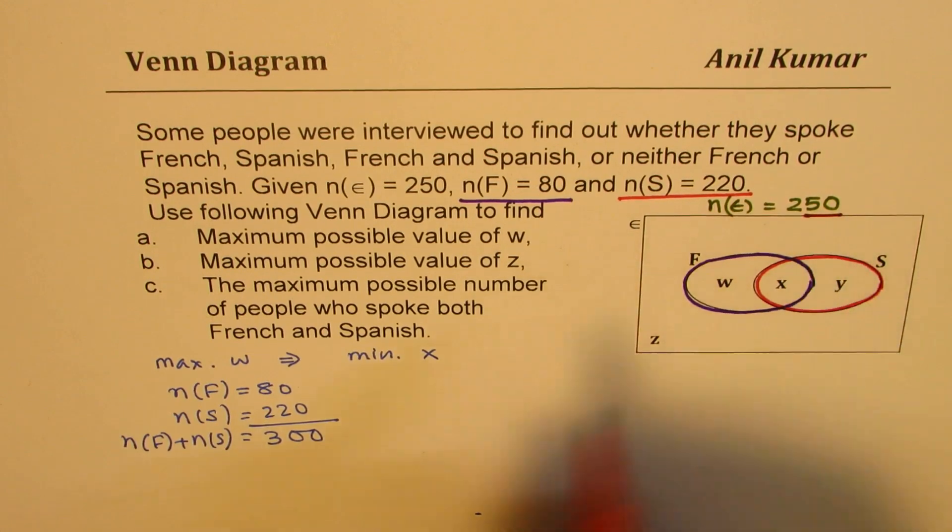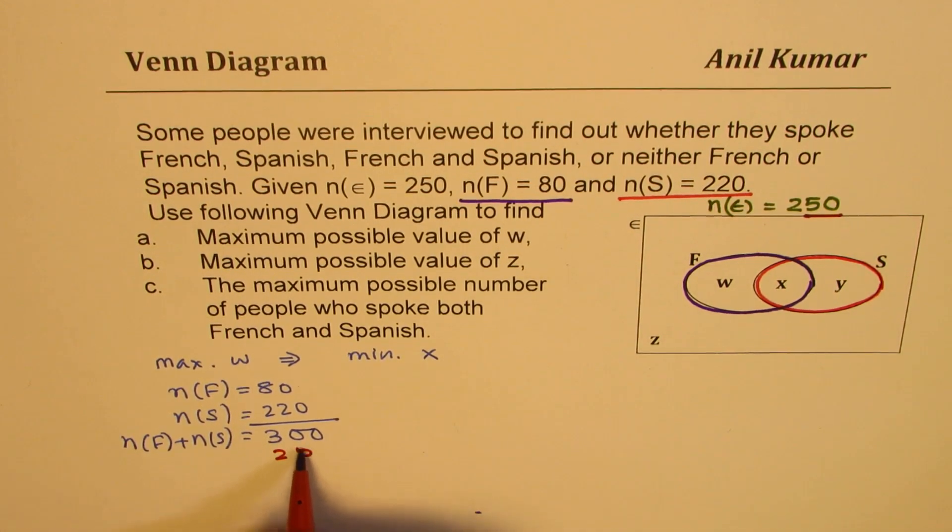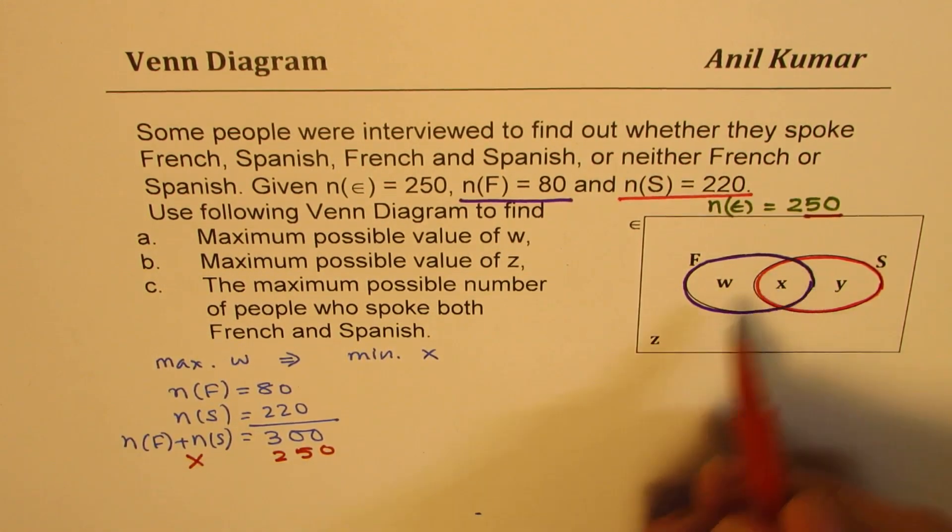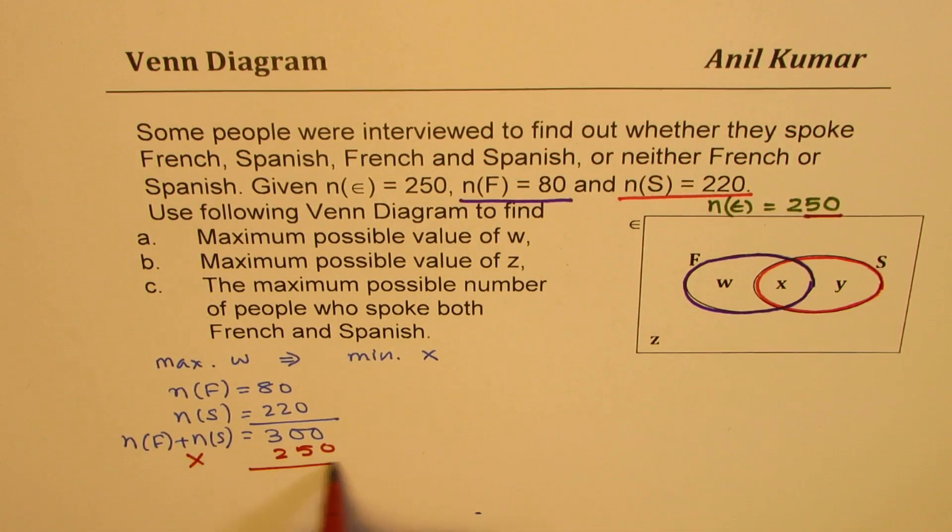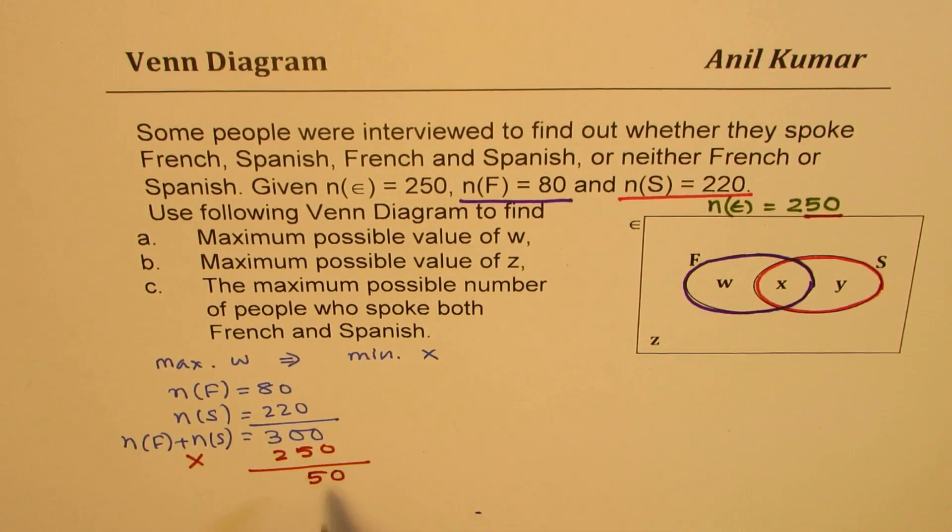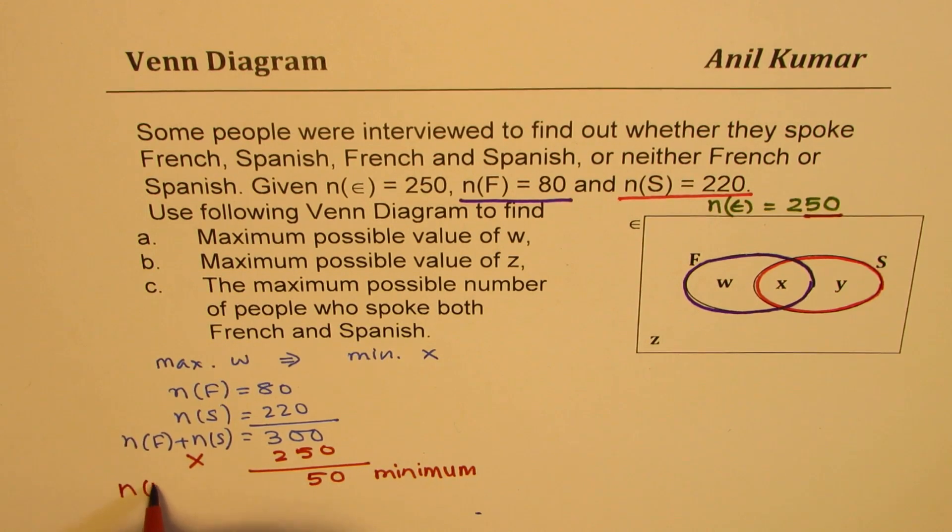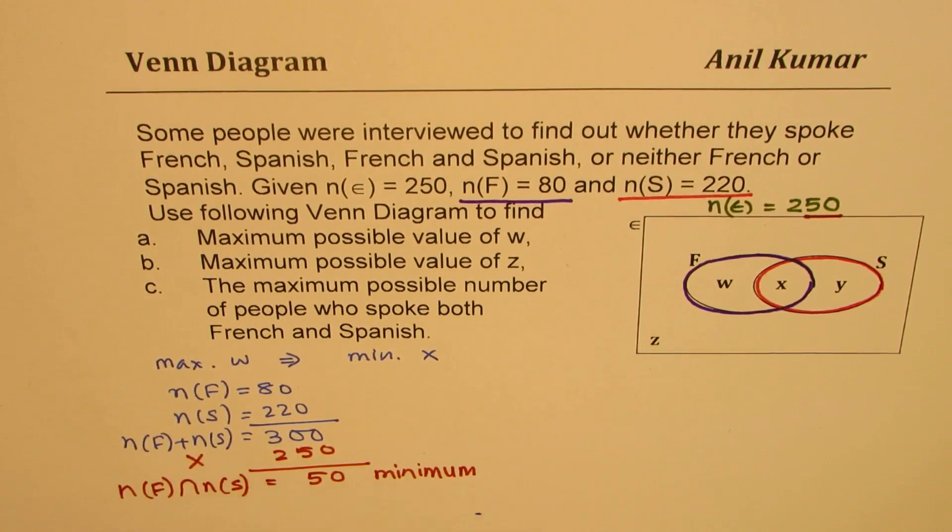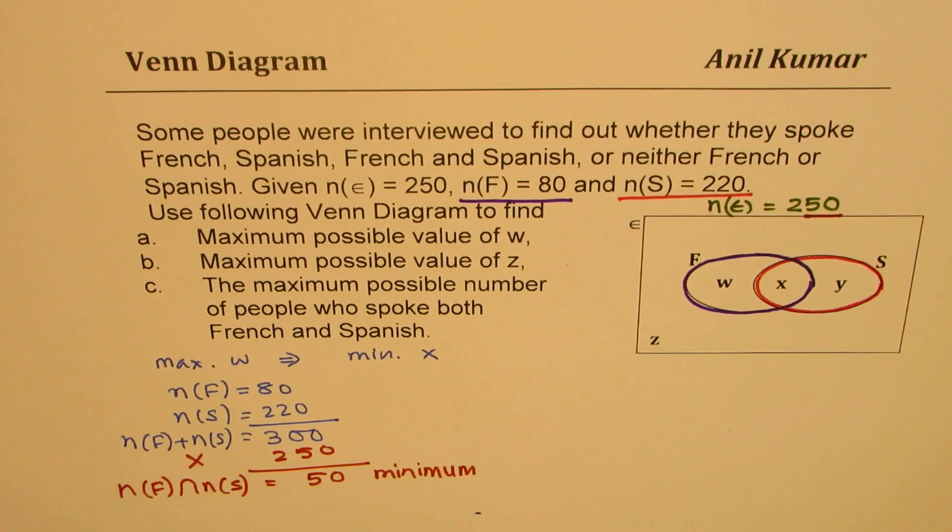So definitely, 250 is total surveyed. So that means X should be overlapping. The overlapping, those who speak both, should be the difference of these two. So 50 minimum. So both, let me write French intersection Spanish. So that should be 50.